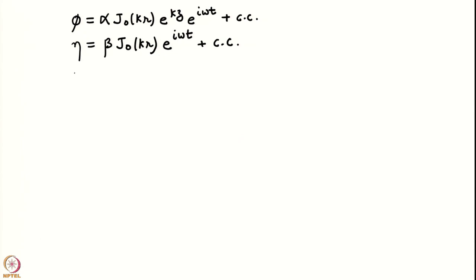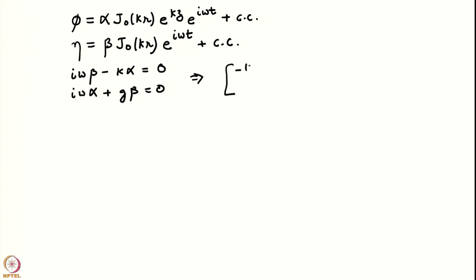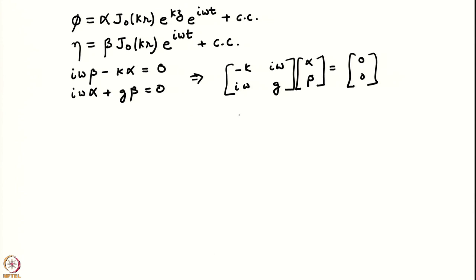Plugging these forms into the two boundary conditions gives two linear homogeneous equations in α and β: (1) iωβ − kα = 0, and (2) iωα + gβ = 0. Writing as a matrix equation, the determinant must vanish, yielding the dispersion relation ω² = gk. Interestingly, deep-water waves have the same dispersion relation regardless of geometry — Cartesian or cylindrical — as can also be expected from dimensional arguments.